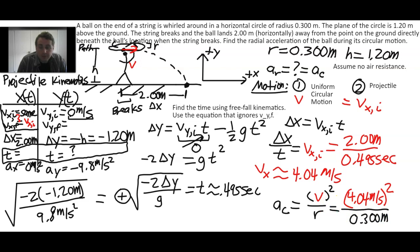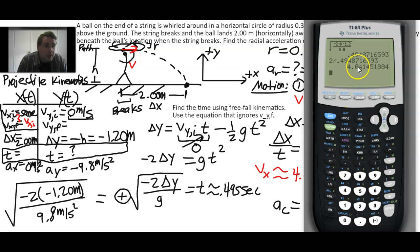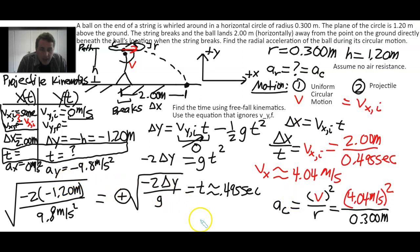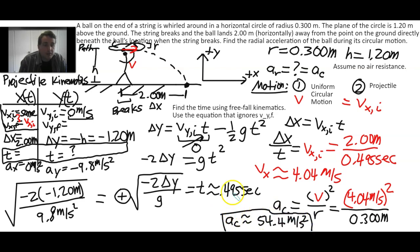Let's put the numbers in: 4.04 meters per second squared, divided by the radius given in the problem for the horizontal circle, 0.300 meters. Calculating on the calculator, we get approximately 54.4 meters per second squared. This is our final answer. We've solved for the centripetal acceleration by using the projectile problem to find the velocity first.